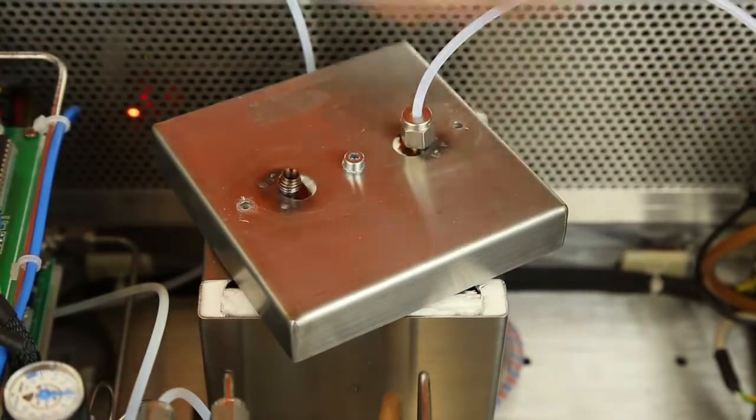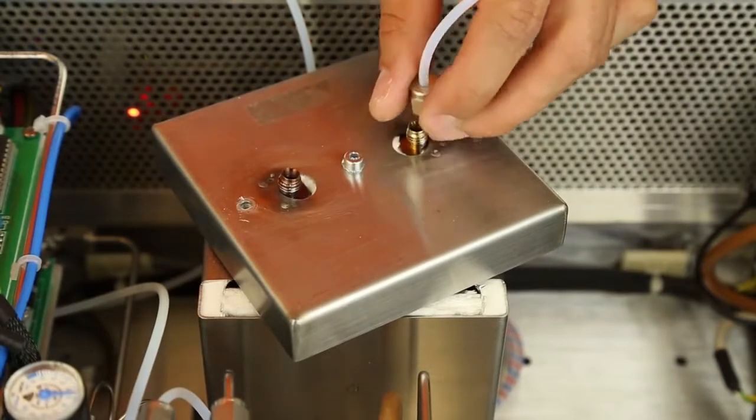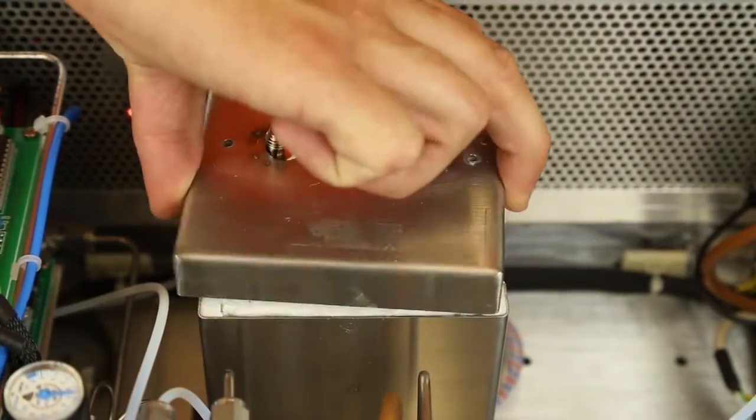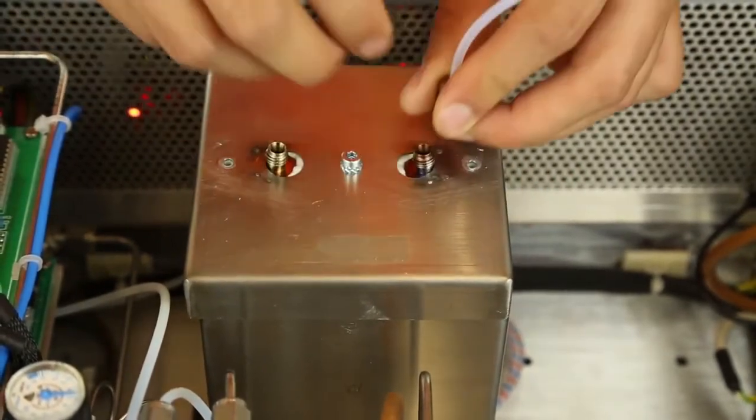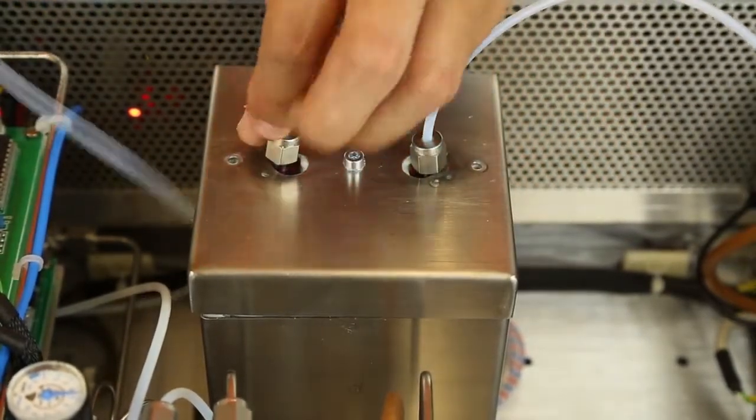Once this temperature has been reached, as quickly as possible, disconnect the gas input, reverse the column and connect the gas input to the former gas output. Reconnect the gas output and tighten the cover with the screws.